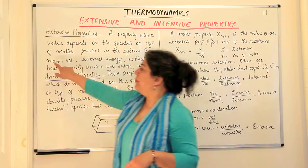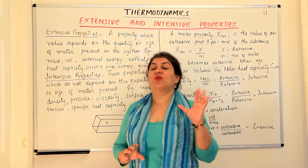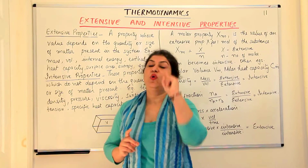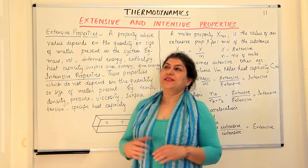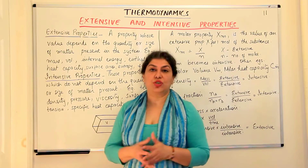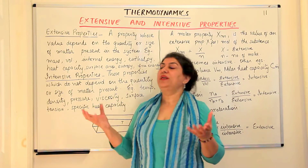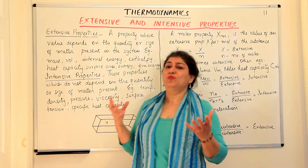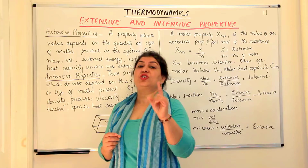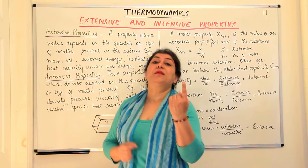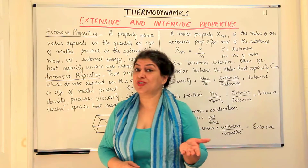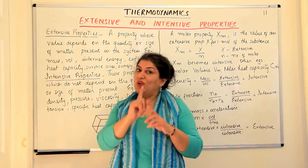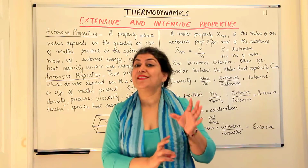Now let us take another example. We have mass, and we want to find the molar mass of a substance. If you divide the mass by the number of moles, you get the mass for one mole — that is the molar mass. For example, you have 64 grams of oxygen molecules — 64 divided by 2 moles gives you the molar mass of oxygen as 32 grams per mole. Whether you take 10 moles or 5 moles, the molar mass — the mass of 1 mole — remains 32.